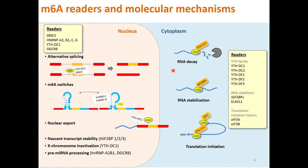HNRNP A2B1 and DGCR8 are components of pre-microRNA processing. In the cytoplasm, YTH family readers can destabilize RNAs and cause RNA decay. During cell differentiation, M6A-marked degradation is an important mechanism of rapid changeover of the old transcriptome to a new transcriptome. IGF2BP proteins can stabilize RNAs and prolong RNA half-lives. EIF translation initiation factors as readers can promote translation efficiency.